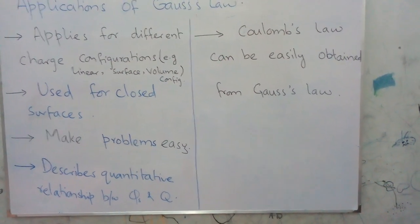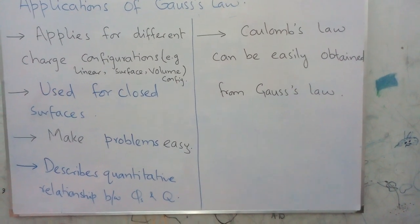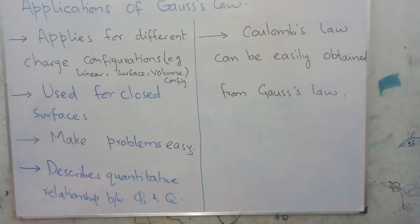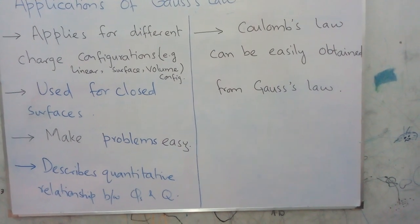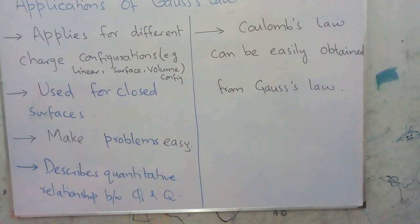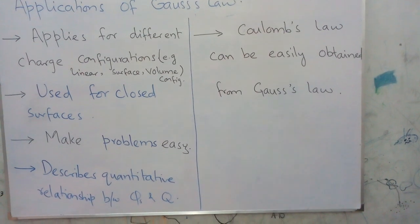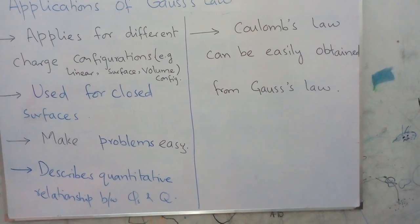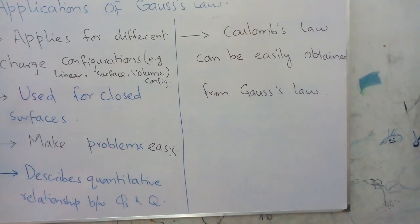The last and most important reason for Gauss's law and its applications is that Coulomb's law can easily be derived from Gauss's law. It means that the result of Coulomb's law can be obtained directly from Gauss's law.